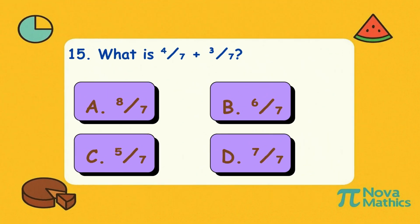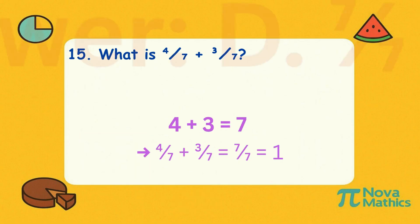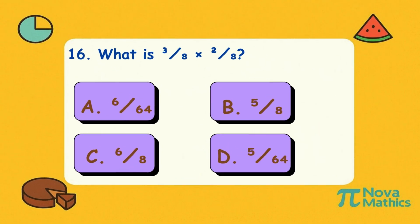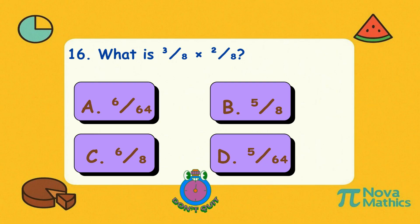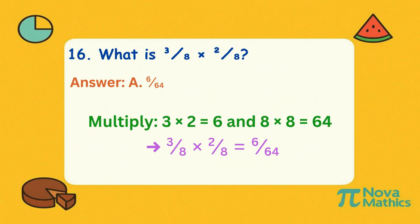Fifteen. What is four-sevenths plus three-sevenths? Four plus three is seven. Seven over seven makes one whole. Sixteen. What is three-eighths times two-eighths? Three times two is six. Eight times eight is sixty-four. So it's six-over-sixty-four.